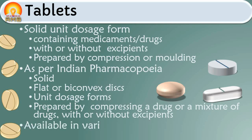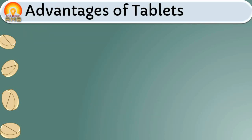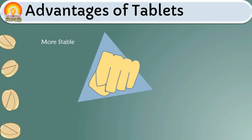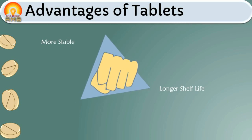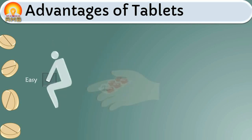Tablets are available in various sizes, shapes, and weights depending upon the amount of drug and mode of their administration. Now let's discuss the advantages of tablets. The first advantage is that tablets are more stable dosage forms as compared with all other dosage forms, thus they have longer shelf life and can be stored for a longer duration. They are also the lightest and most compact dosage forms, making them easy to handle, dispense, and transfer.